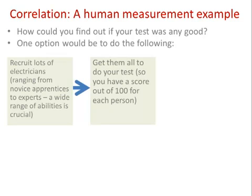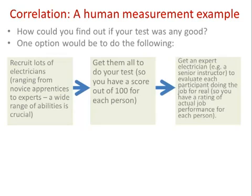The second step is to get them all to do our test, so that we end up with a score out of 100 for each person. Then we let them loose into the real world and get an expert electrician — some sort of senior instructor — who follows them around on real jobs and comes up with a rating for actual job performance. For each person we've got two numbers: their test score and their real-world job performance rating. Our test of validity is simply: does the test correlate with real job performance?